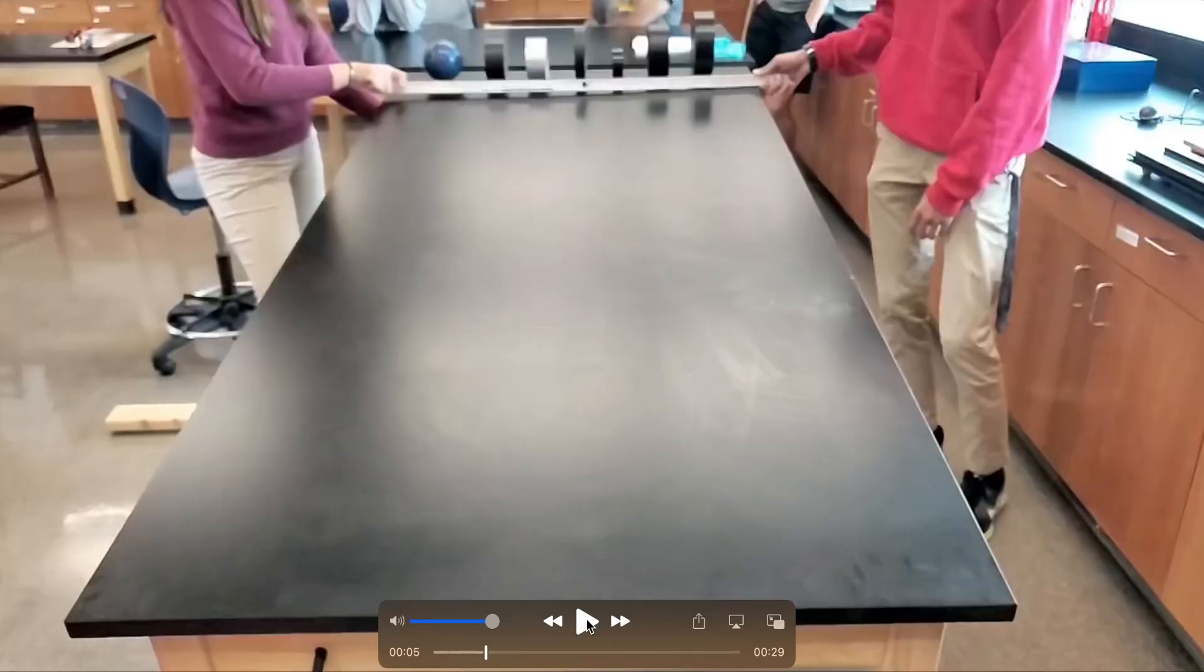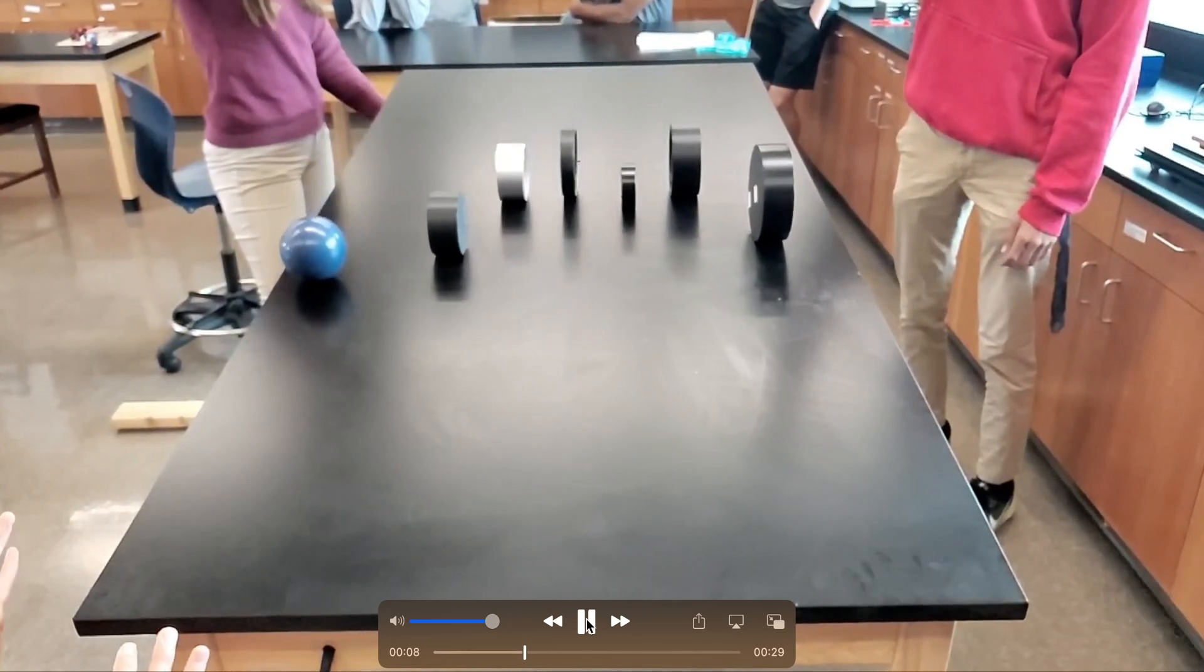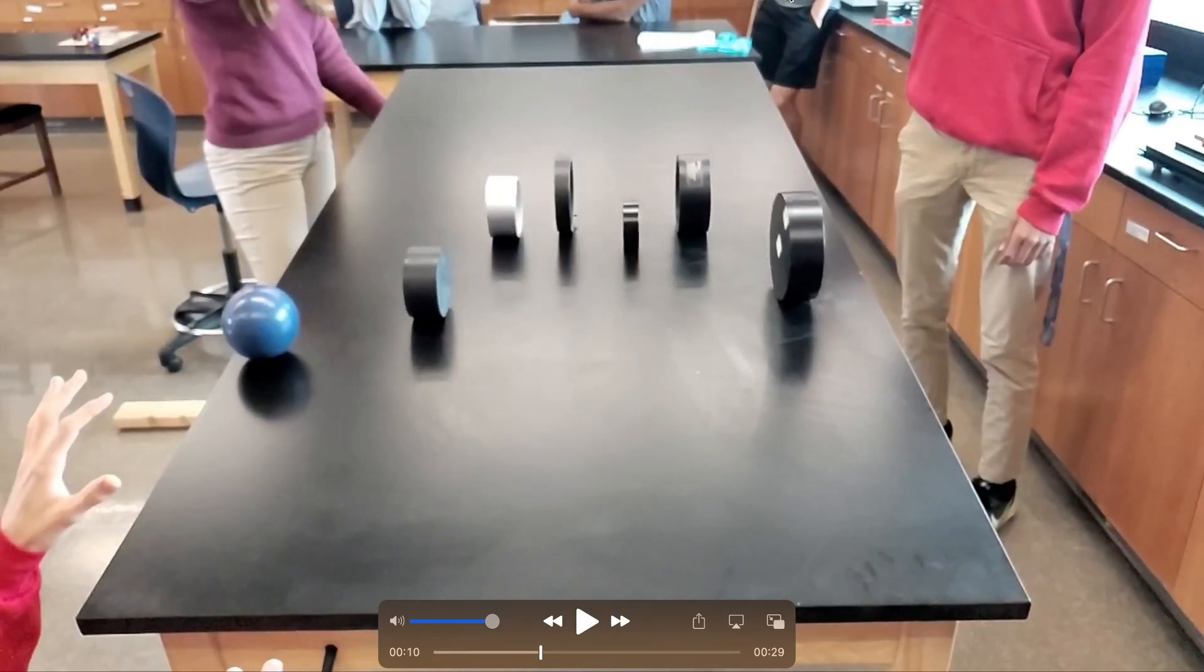Discs coming in second place with a moment of inertia of one-half MR squared. And the rings with a moment of inertia of MR squared coming in last place.